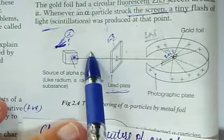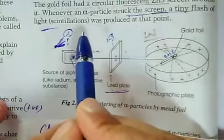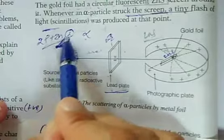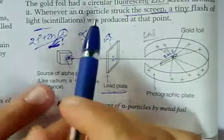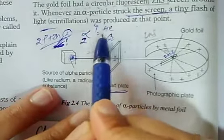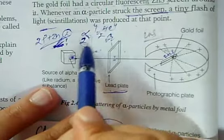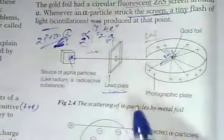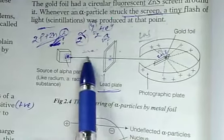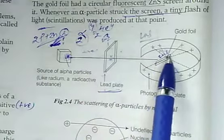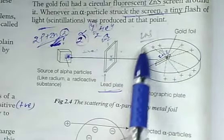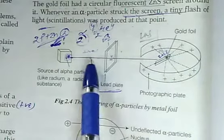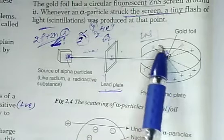Alpha particles are positively charged particles. We have studied the properties of alpha. Alpha particles are helium nuclei — He-2,4 — meaning the charge is 2 and the mass is 4 amu. This is the gold foil, and here is a circular zinc sulfide coating around it. A scattering of light is produced on this screen.